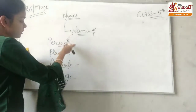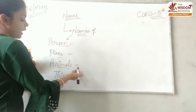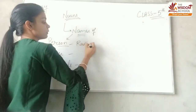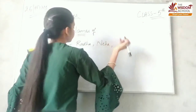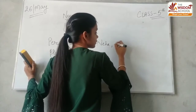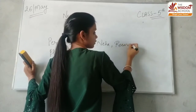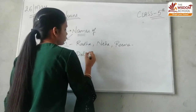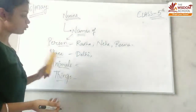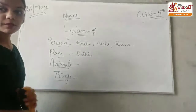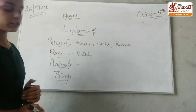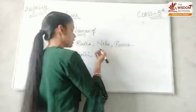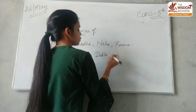Nouns kya hai? Names hain, kis ke? Person ke, place ke, animals ke, or things ke. For example, person mein baat karte hain Ratha ki, ya Neha ki baat karein. If your name is Rima, toh kya hoga? Name hoga. Place - agar main aapko bolou ki kal main Delhi ja raha hoon, toh Delhi kya hai? Name of the place. Delhi, India ki capital bhi hai, toh woh bhi name of place. India kya hai? Country hai, toh woh bhi name of the place hoga.